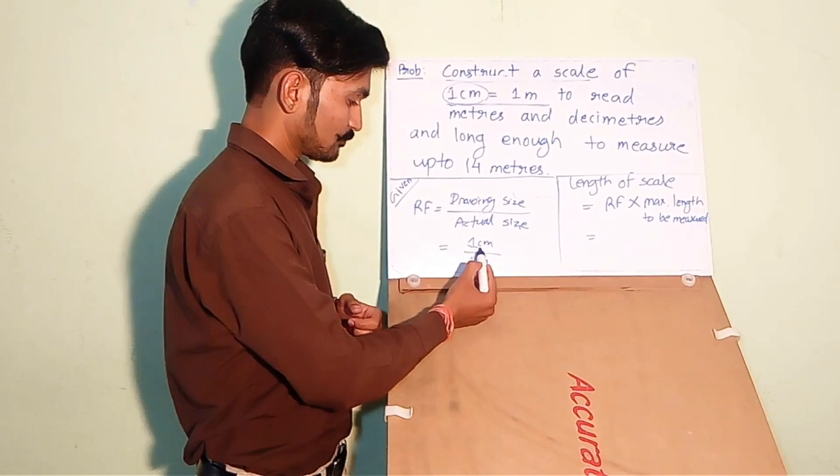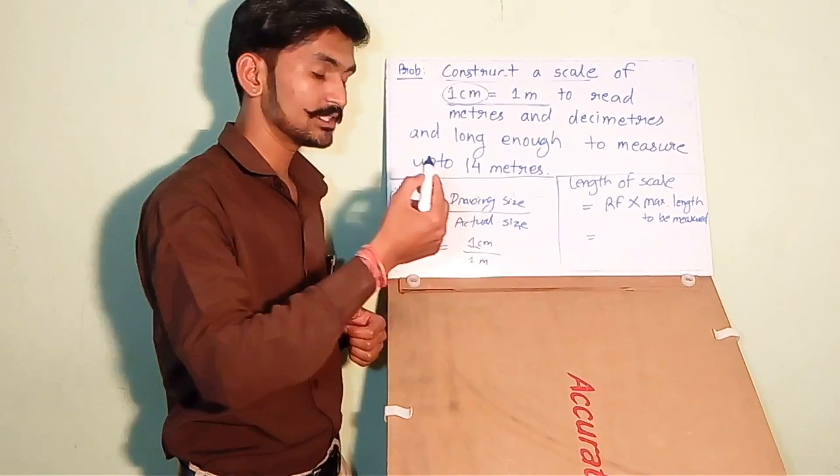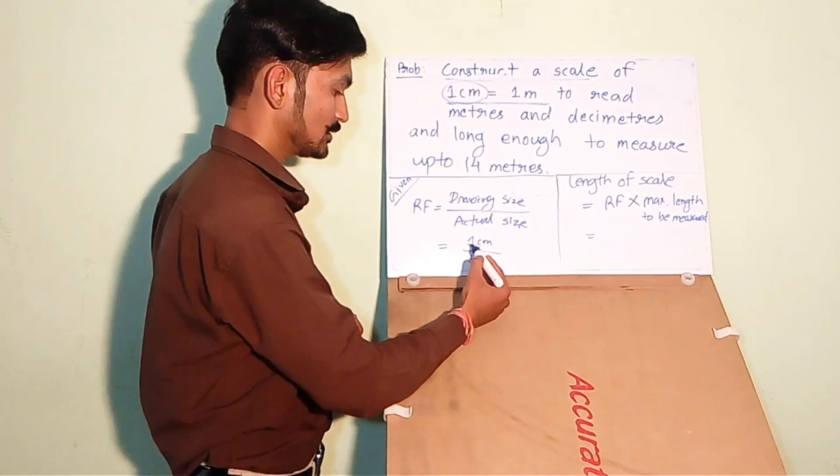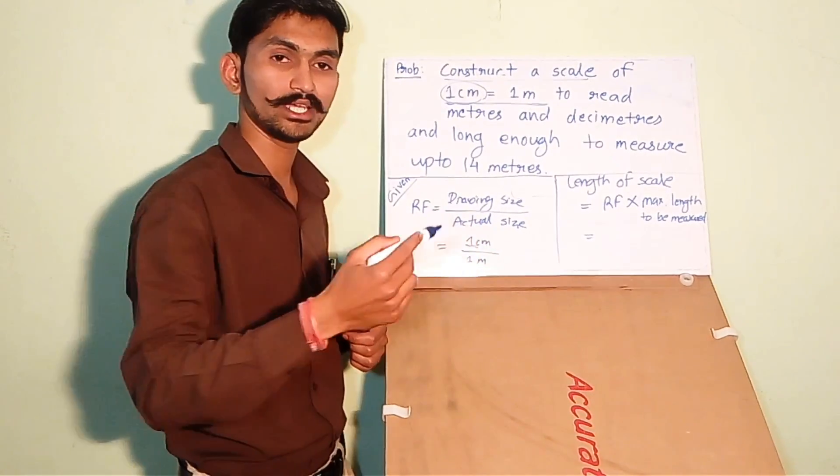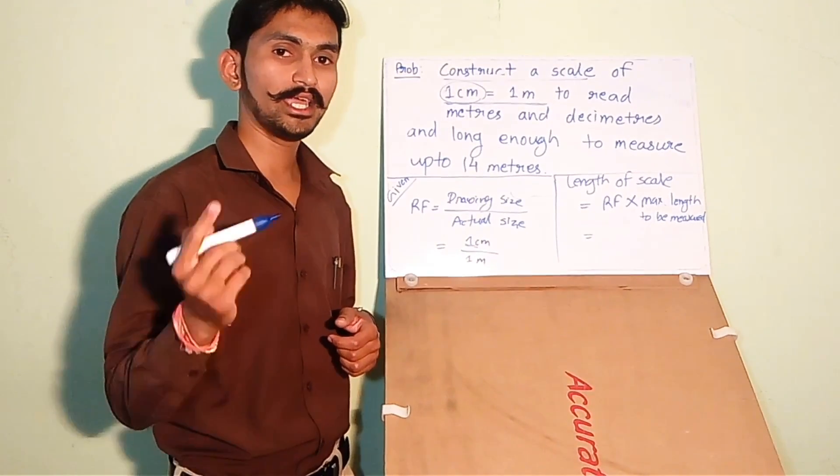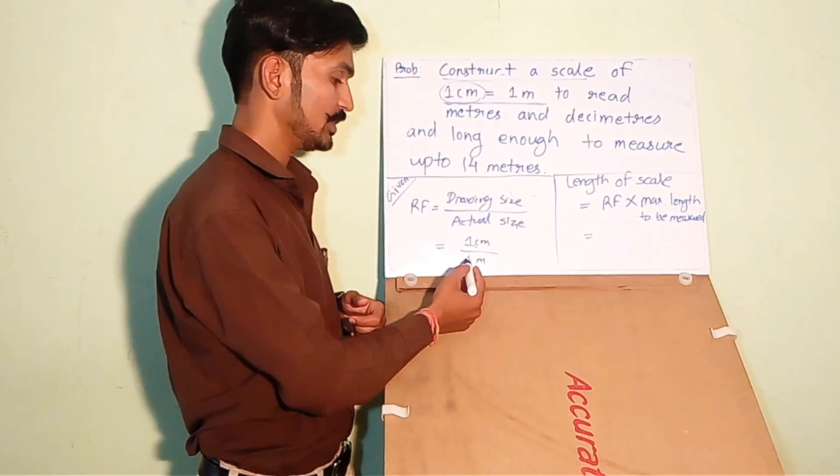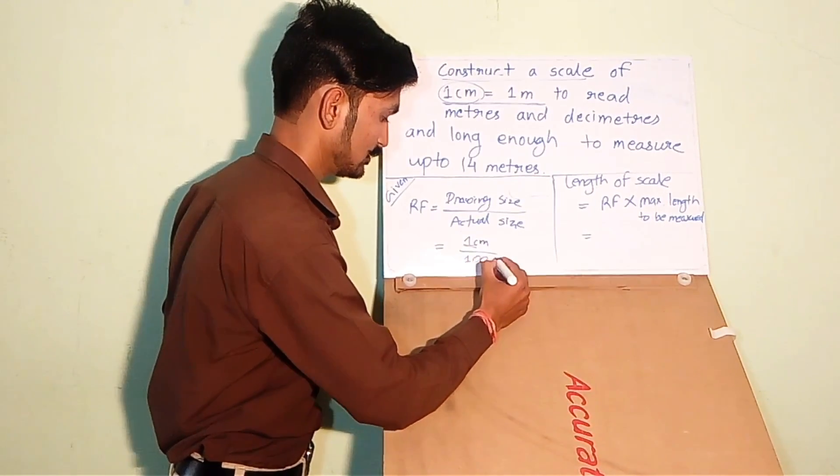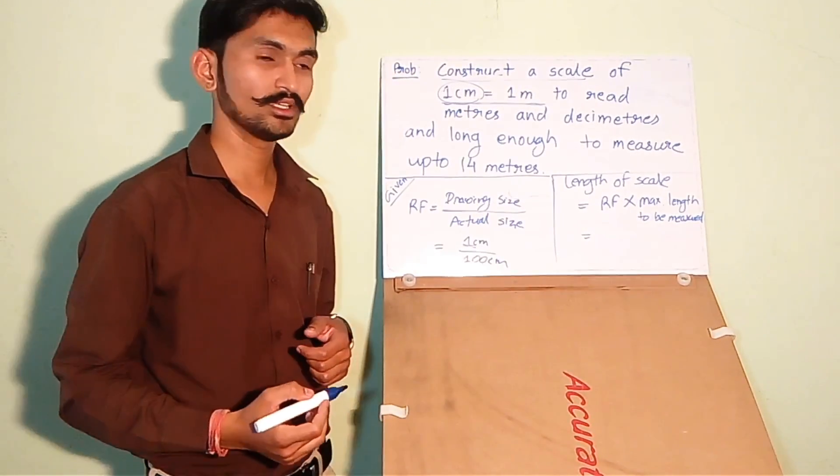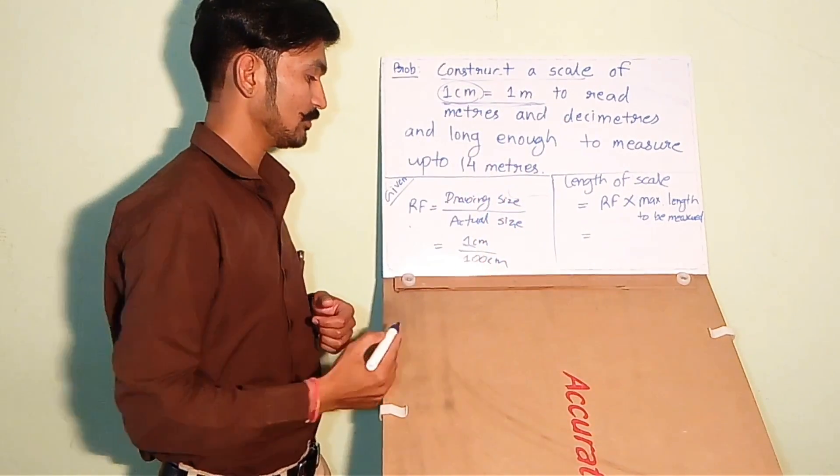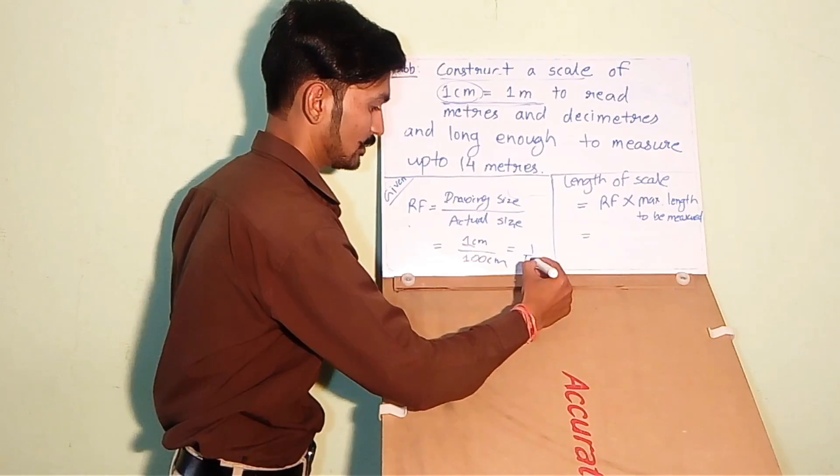Hence, you have to convert the meter into centimeters. It will be 100 centimeters. So from this line we have got the RF which is 1 by 100.